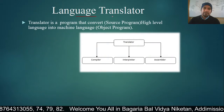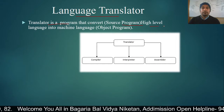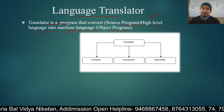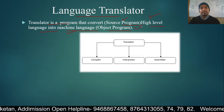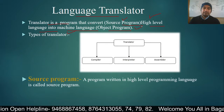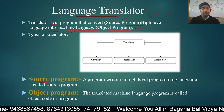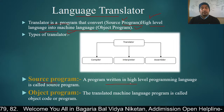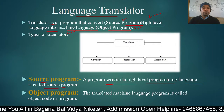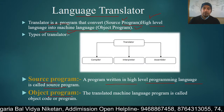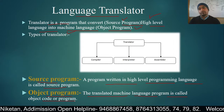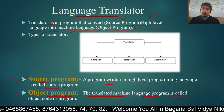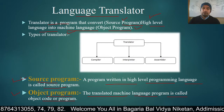Now let's talk about the translator. A translator is a program that converts a source program written in high-level language into machine language — this output is called the object program. The source program is written in high-level language, and the translated machine language program is called the object program. So the translator converts the source program into the object program.